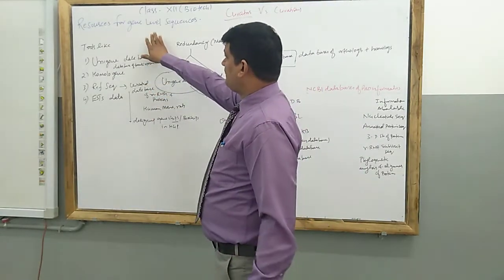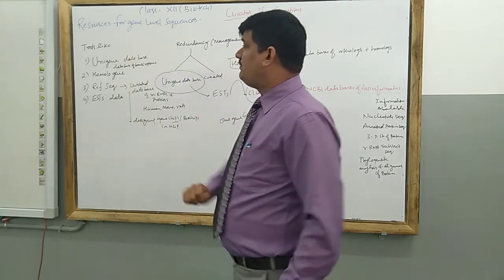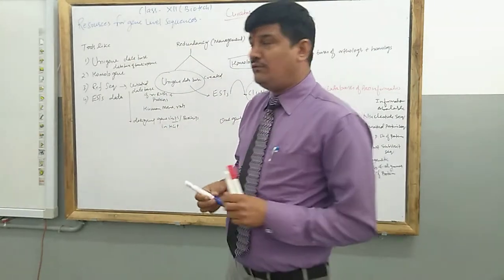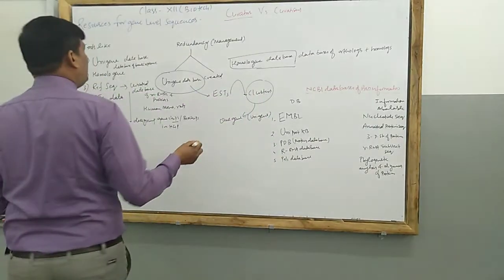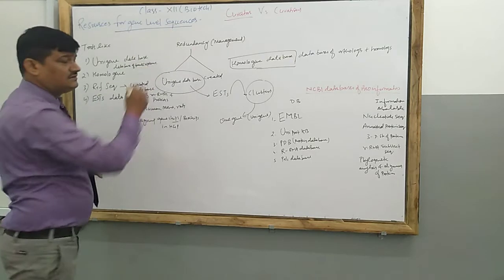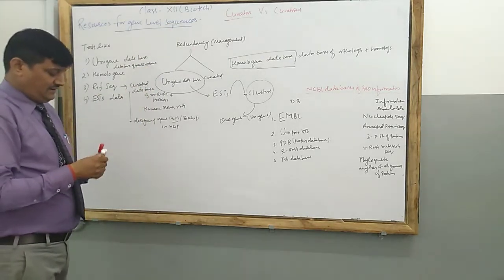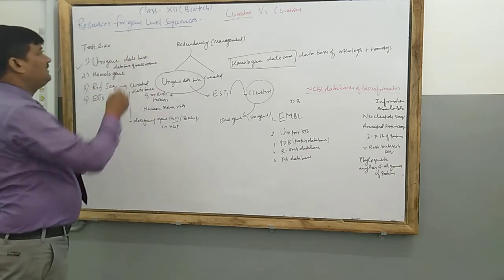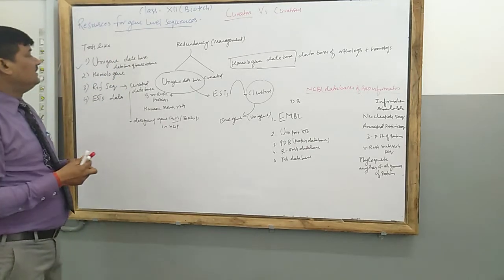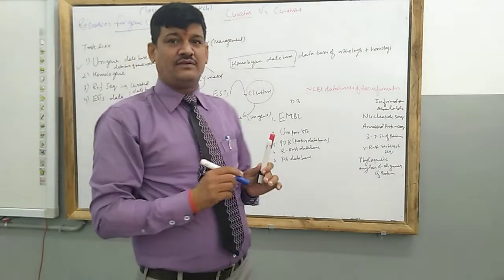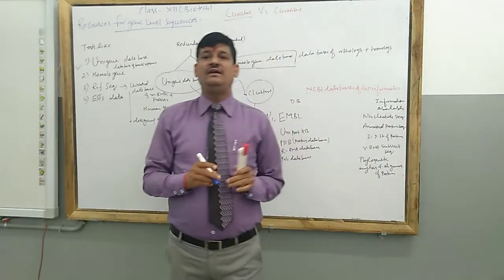The process of gene level sequencing is achieved by a number of tools that help with sequencing of the gene. The first tool we are using for gene level sequencing is the Unigene database. Unigene, as the name suggests, means single or same kind of gene.